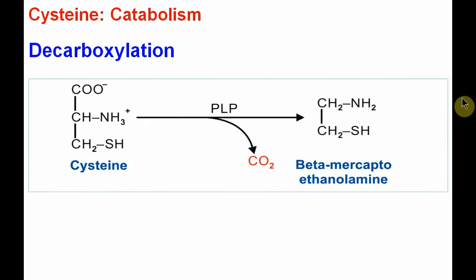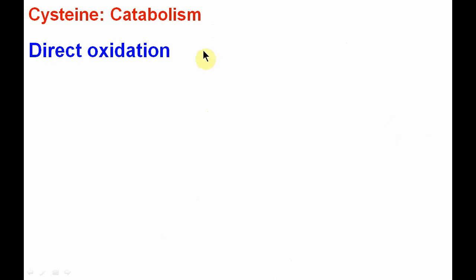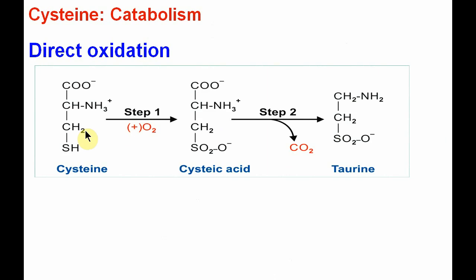The second catabolic pathway is decarboxylation: cysteine upon decarboxylation with pyridoxal phosphate is converted to beta-mercaptoethylamine, which is utilized for the synthesis of coenzyme A along with beta-alanine. The third catabolic step is direct oxidation: cysteine undergoes direct oxidation to form cysteic acid, which is then decarboxylated to form taurine. Taurine helps synthesize taurocholic acid.